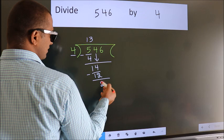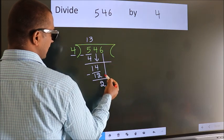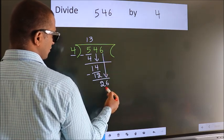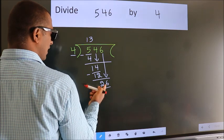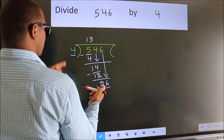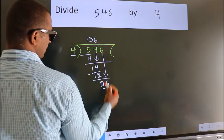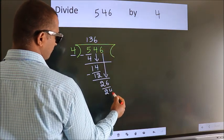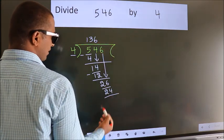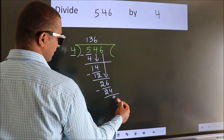After this, bring down the next number. So, 6 down, making 26. A number close to 26 in the 4 table is 4 times 6 is 24. Now, we subtract. We get 2.